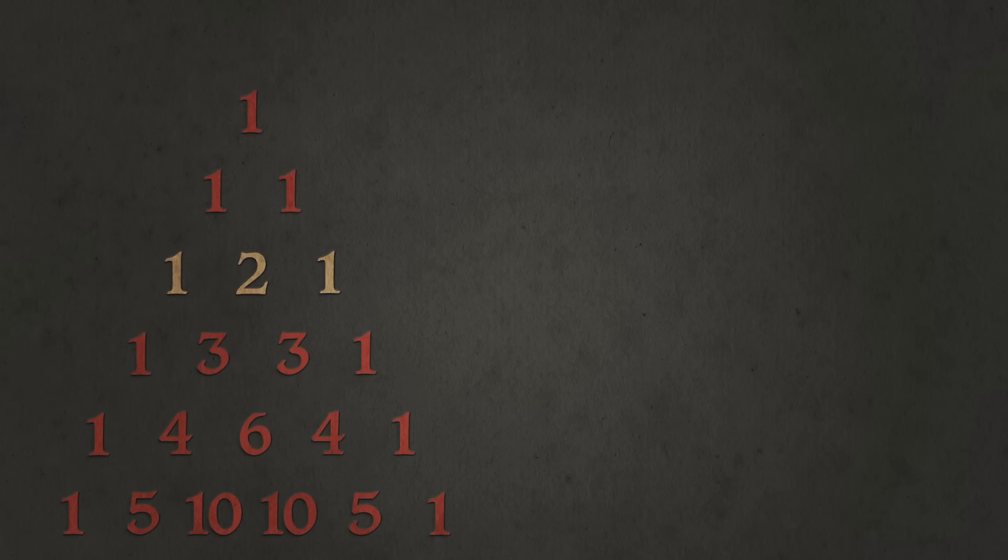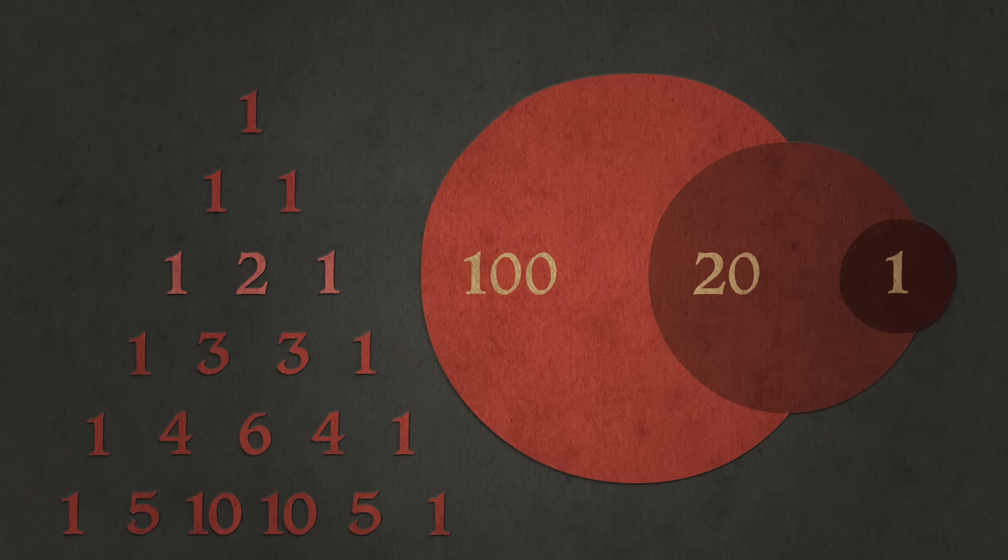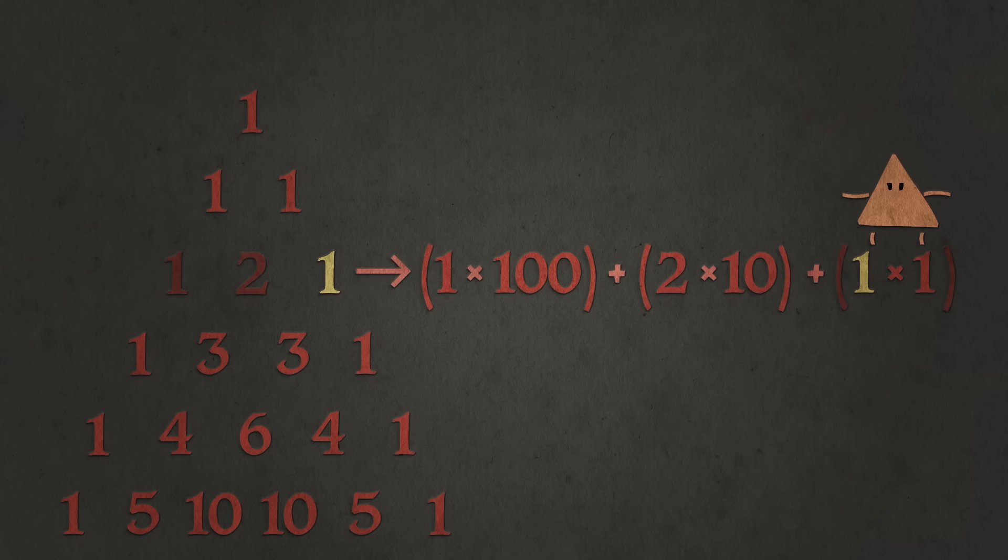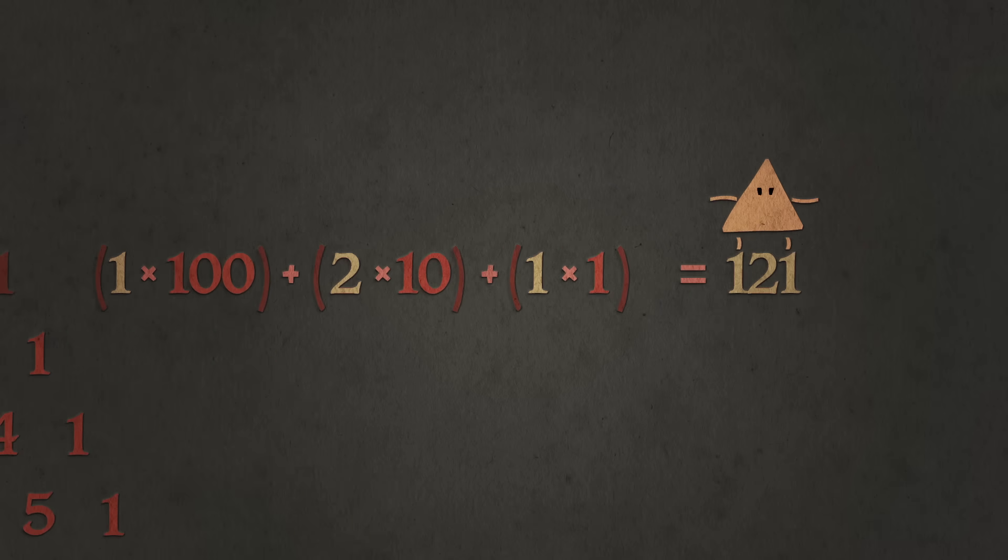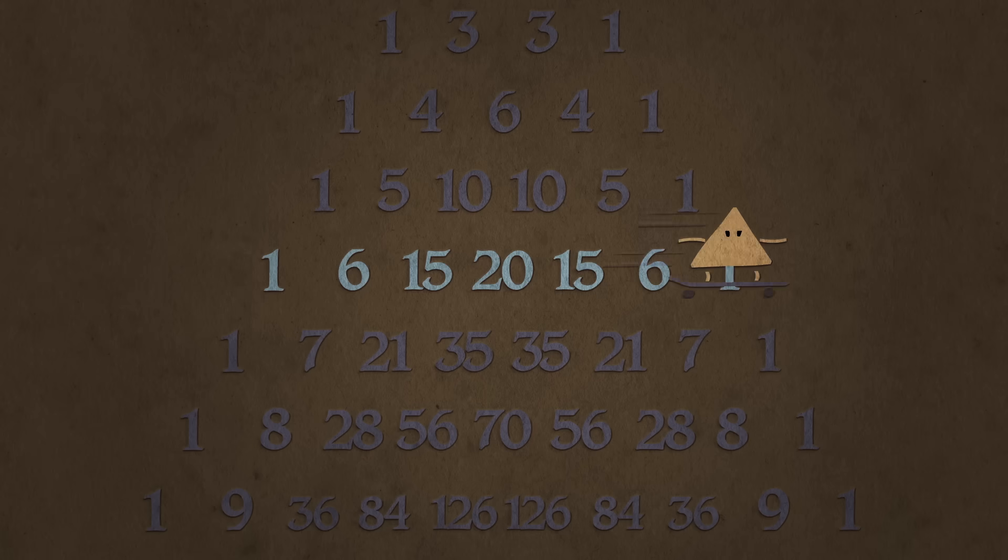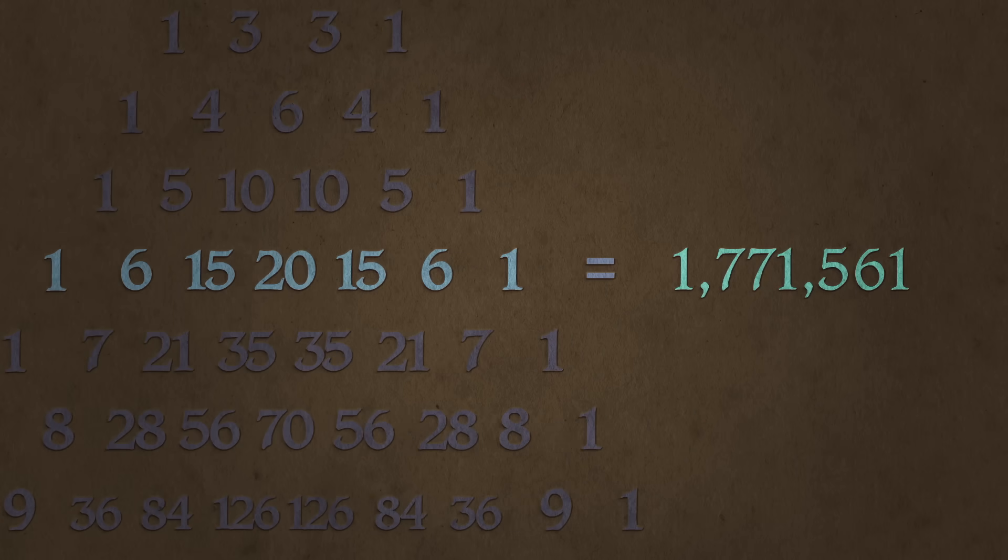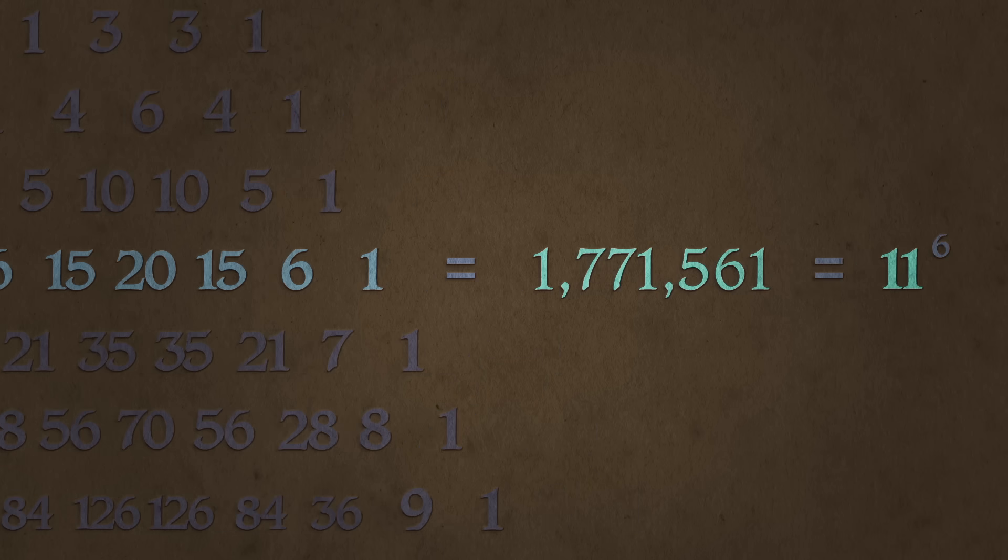Or in a given row, treat each number as part of a decimal expansion. In other words, row 2 is 1×1 + 2×10 + 1×100. You get 121, which is 11 squared. And take a look at what happens when you do the same thing to row 6. It adds up to 1,771,561, which is 11 to the 6th, and so on.